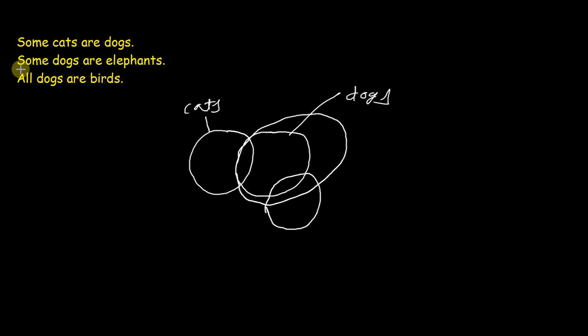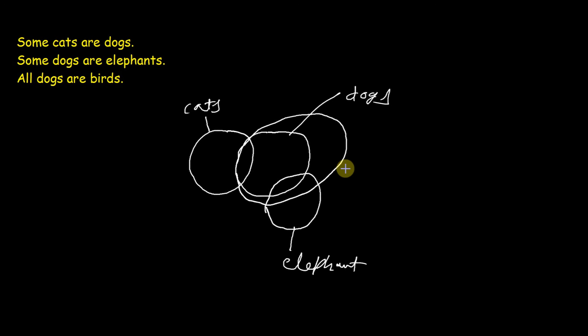The next statement is some dogs are elephants, so we draw a circle which will contain the dog. And all dogs are birds. We will start with simple questions and as you improve your understanding, we will move to complex problems.